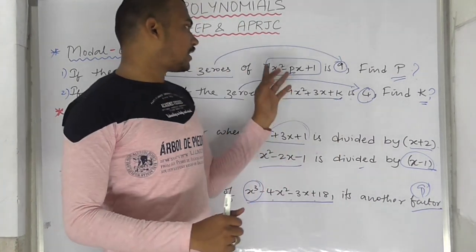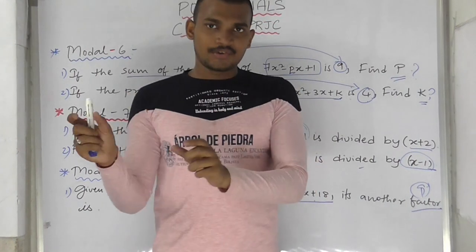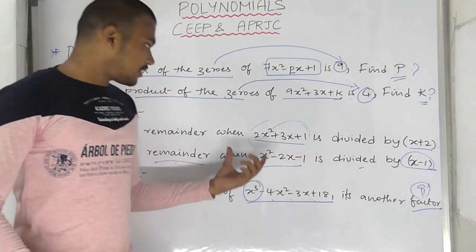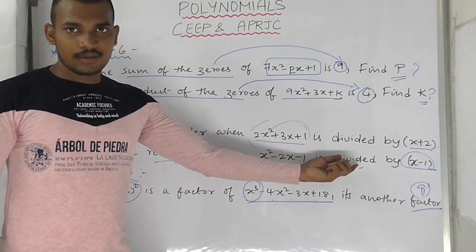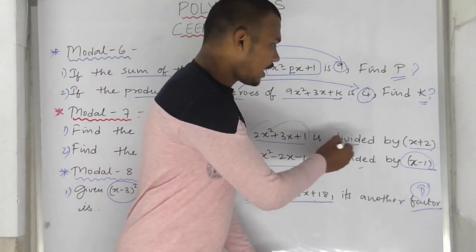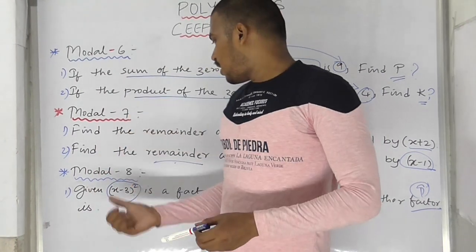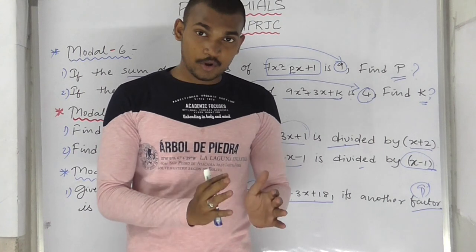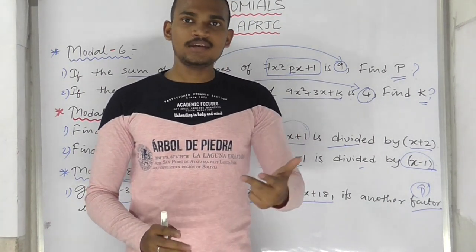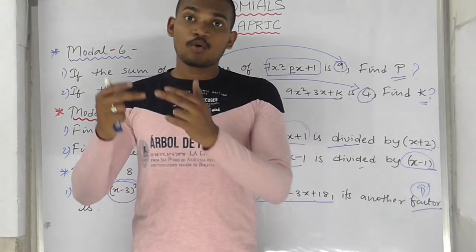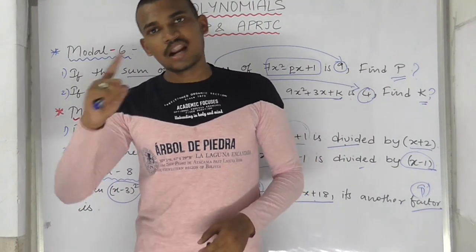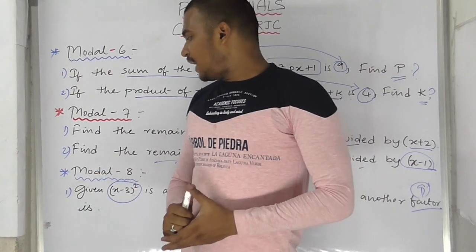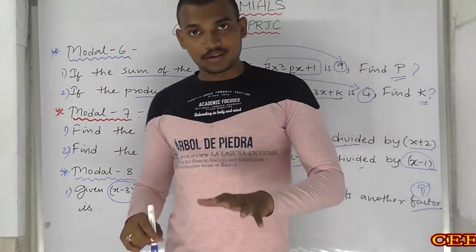Model 6 is about finding values — given a quadratic equation with unknowns P, Q, or A, find those values. Model 7 is about division — finding the remainder. Model 8 is about cubic polynomial with 2 roots given, find the 3rd root; or quadratic polynomial with 1 root given, find the other root.